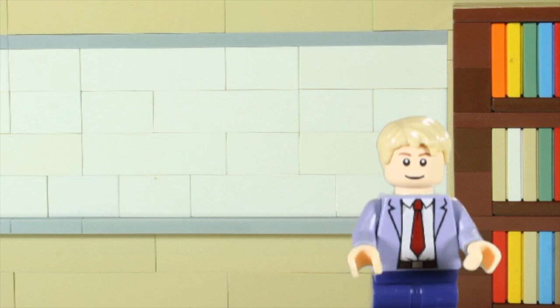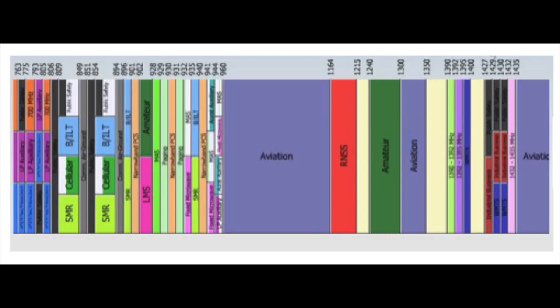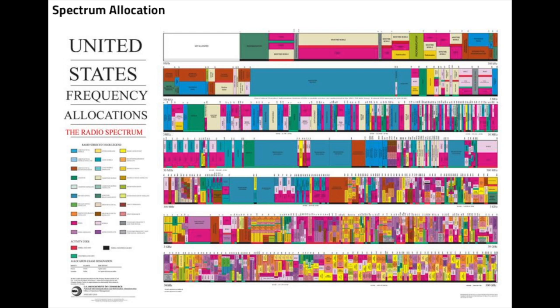Some bands are only allowed to be used for TV. And some are strictly used for the police, or for the military, or for air traffic control. To give you a sense of how complicated this regulation is, here is the official US government allocation of the spectrum.